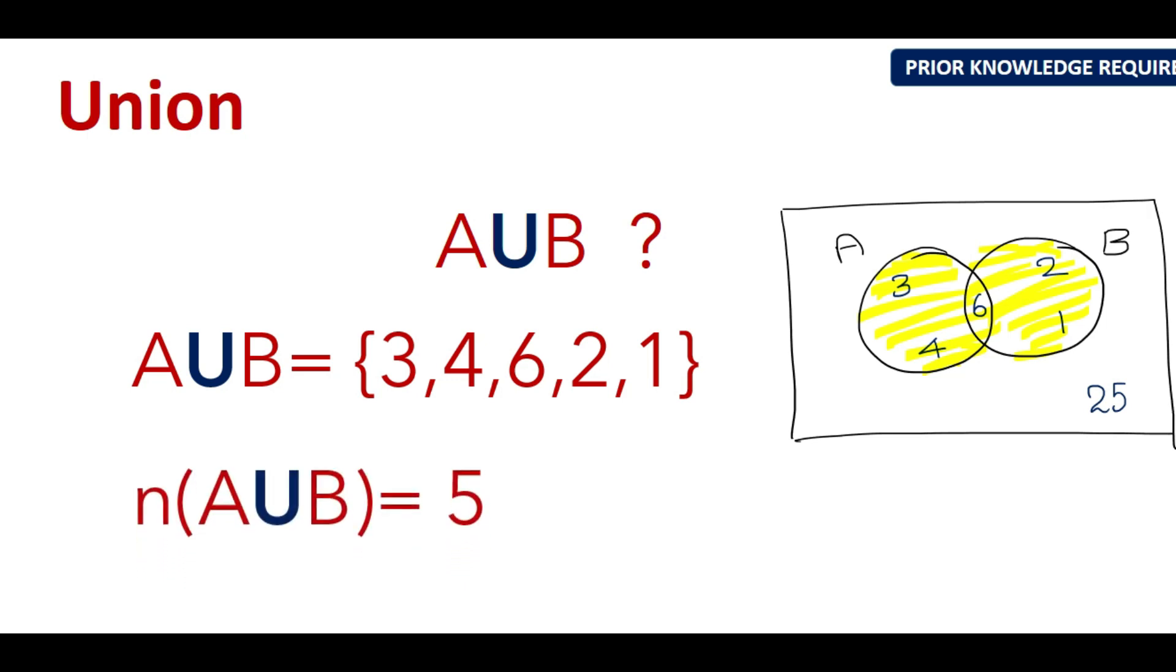And if you are asked to find N of A union B, now N stands for the number of elements in A union B. It's just 1, 2, 3, 4, 5. You have 5 elements. So N of A union B is written as 5.